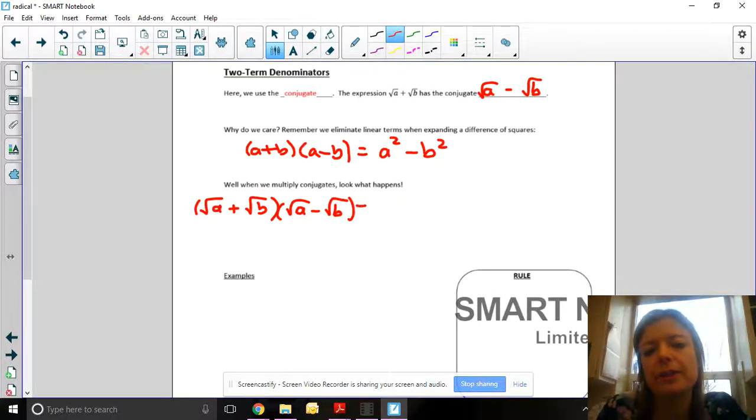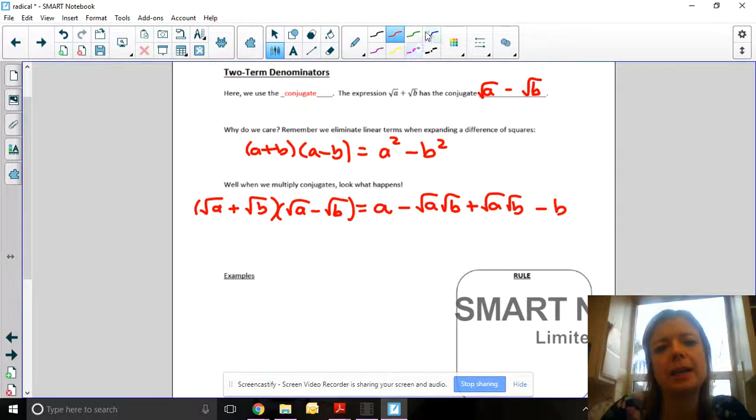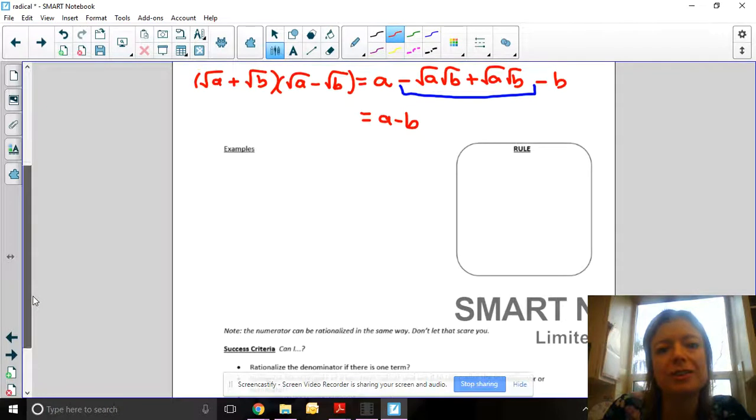When we multiply root A plus root B times root A minus root B, if we foil this out, you get root A times root A, which is A, then minus root A root B plus root A root B, and then minus B. Notice that this section, you're just adding and subtracting the same thing. So you're just left with A minus B. That's why multiplying by the conjugate is useful, because you just are left with integers.